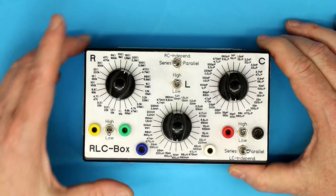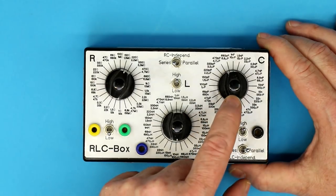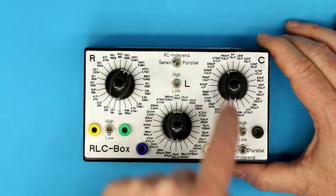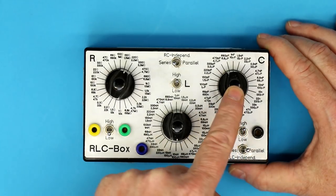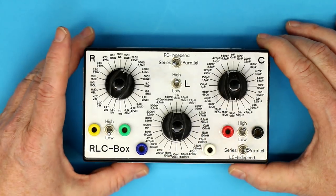The capacitors go from 10 picofarads - it doesn't make sense to go below 10 picofarads also because of the parasitic capacitance between the leads and the switch planes - from 10 picofarads up to 1000 microfarads.